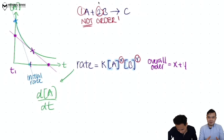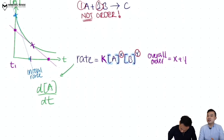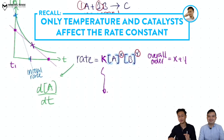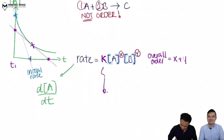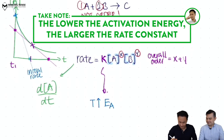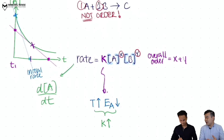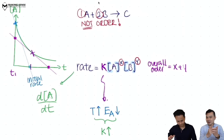The next part of the rate equation is the special letter K, known as the rate constant. This rate constant depends on two major factors. Recalling from secondary four: temperature and catalyst affect the rate. K is affected by temperature — the larger the temperature, the larger the rate constant. Also, the lower the activation energy, the larger the rate constant. So temperature, the presence of a catalyst (which lowers activation energy), and concentrations of reactants are all represented within this rate equation.